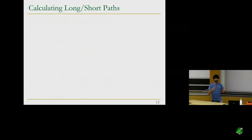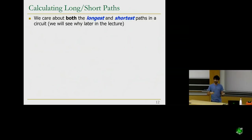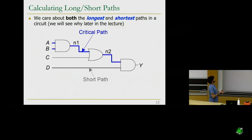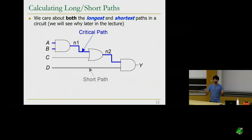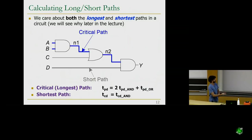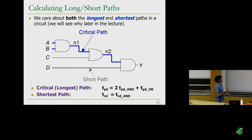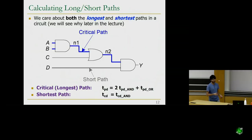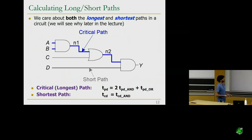We use contamination and propagation delay to determine the longest and shortest paths in our design — and we care about both. The blue critical path goes through three different logic gates, giving it the delay of all three. The shortest path only goes through one gate. The propagation delay through the critical path is the sum of individual component propagation delays: two AND gate delays plus one OR gate delay. The contamination delay is just the contamination delay of one AND gate.